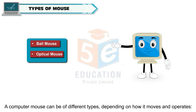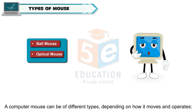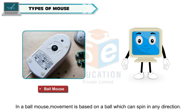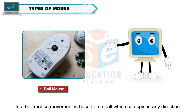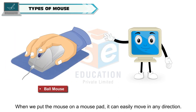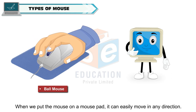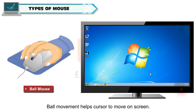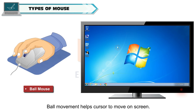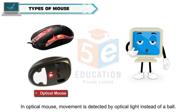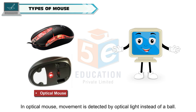A computer mouse can be of different types, depending on how it moves and operates. In a ball mouse, movement is based on a ball which can spin in any direction. When we put the mouse on a mouse pad, it can easily move in any direction, and the ball movement helps the cursor to move on screen. In an optical mouse, movement is detected by optical light instead of a ball.